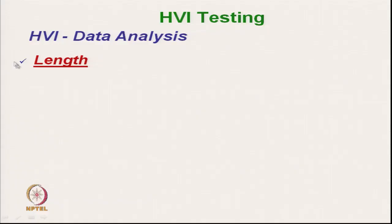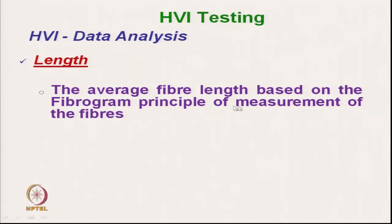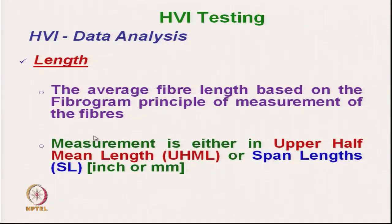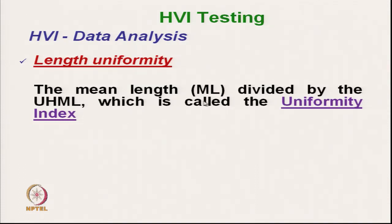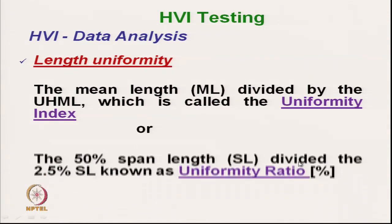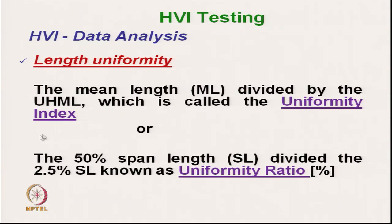The length measurement technique will not be discussed here because it is exactly the same as discussed for the fibrograph. Length data — the average fibre length — is based on the fibrogram principle of measurement. Here also we measure the upper half mean length and span length. The mean length divided by the upper half mean length gives the uniformity index or uniformity ratio.